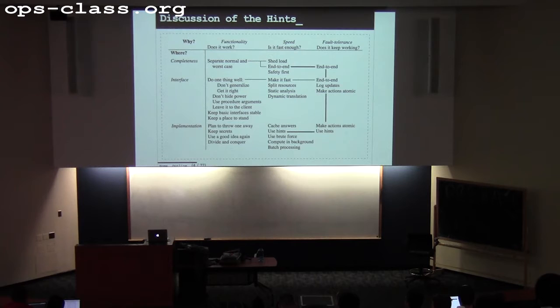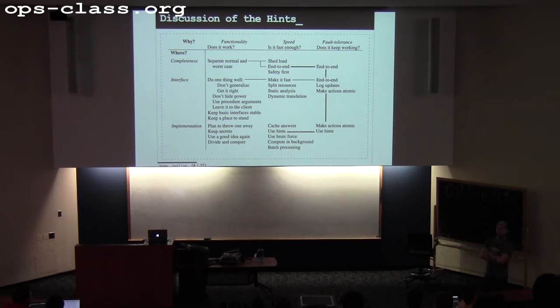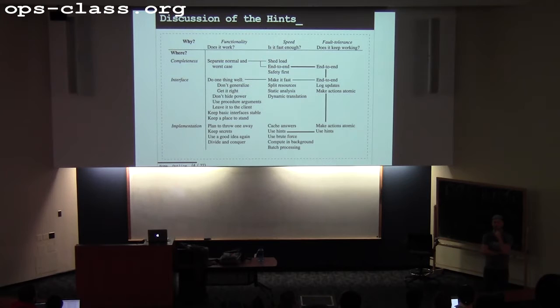Who wants to talk about one of these hints? Pick anything. Last time we had an example of separating normal and worst case. Anyone want to pick another one? Someone suggested: 'Keep basic interfaces stable.' So what does that mean? This is in the section where we're talking about the system's interface.